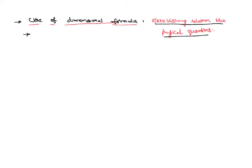The principle of homogeneity tells you that the dimensions of the LHS side of the equation shall be equal to the dimensions of the RHS side of the equation. So we are going to use the principle of homogeneity.